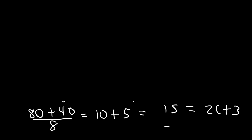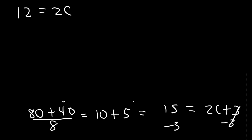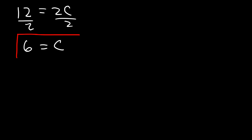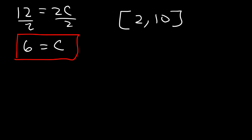Dividing both sides by 8: 120 over 8 is 15, so 15 equals 2C plus 3. Subtracting 3 from both sides: 15 minus 3 is 12, so 12 equals 2C. Dividing by 2, C equals 6. And 6 is the midpoint of AB, which is 2 to 10. For a linear function, the C value where the area of the rectangle equals the area under the curve is simply the midpoint of AB.